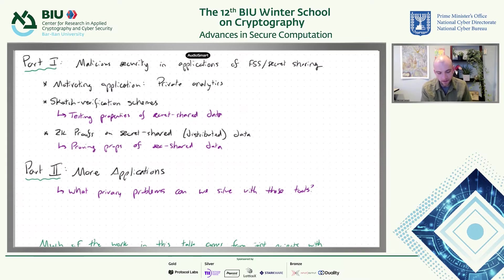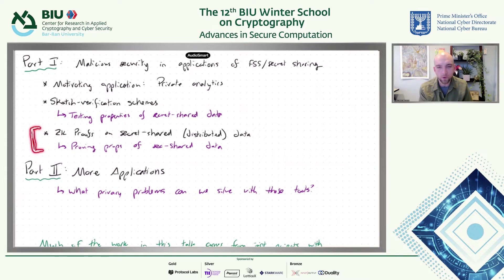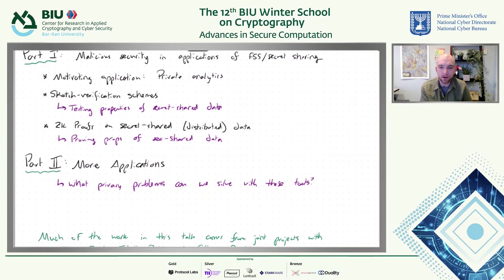I'm going to talk about applications of some of the tools you've seen already, but I'll take a broad view. In the first part of the talk, I'll cover one interesting challenge that comes up in practice: how do you protect against misbehavior in applications of FSS techniques and secret sharing protocols? The motivating application is private analytics. The two tools I'll cover are sketch verification schemes — how do you test properties on secret shared data — and zero knowledge proofs on secret shared data. In the second part, I'll talk about a wider array of applications.